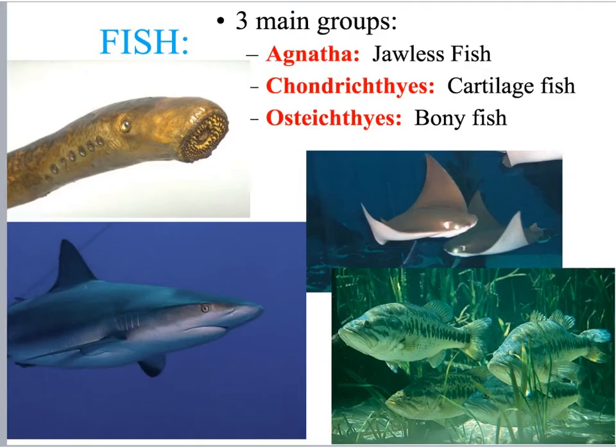Listed here is the classification for our fish: we have jawless fish, cartilaginous fish, and bony fish, with pictures representing each category. These three main groups would go into the general example column.